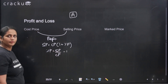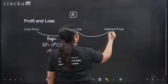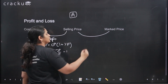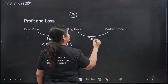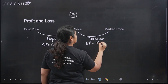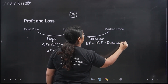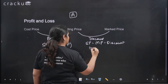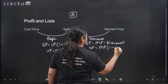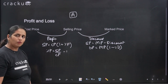The relationship between selling price and mark price works through the idea of discount. Selling price equals mark price minus discount. If discount is given in percentage terms, selling price equals mark price into (1 minus percentage discount). This is the relationship between selling price and mark price.